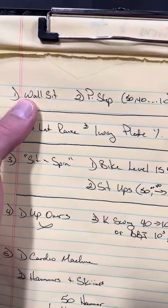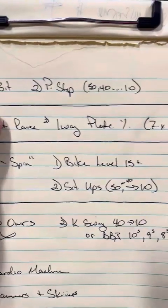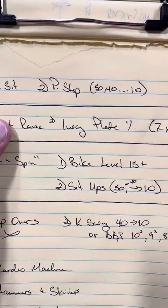So 6 to 7 minutes, one person's going to wall sit. Person 2 is going to rock 50 power steps, pull them off 40, 30, 20, 10.